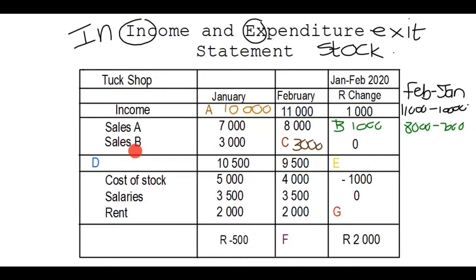Looking at D: the income was our sales. The cost, salaries, and rent would be our expenses — money we pay out. In January the total expenses were 10,500 rand. That came from 5,000 plus 3,500 plus 2,000, which gives you 10,500 rand.